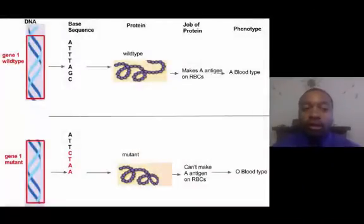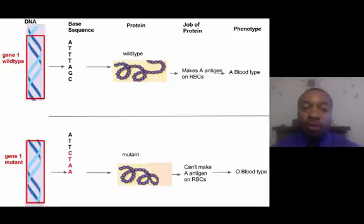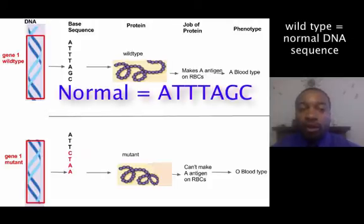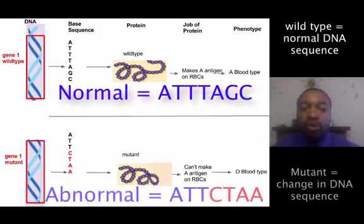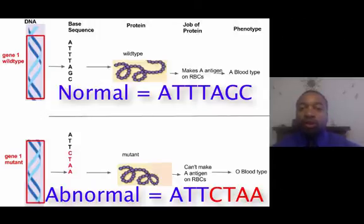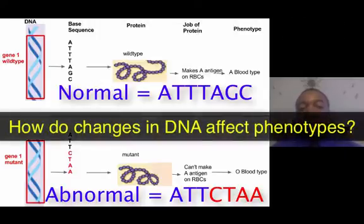Now let's add information about the sequence of DNA. Zooming in on gene one, we see a wild-type sequence and a mutant sequence with two different base sequences. Looking at the rest of this image, how do you think mutations affect our phenotypes? Jot down your ideas, then unpause when you're ready to continue.